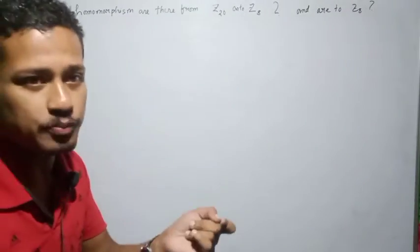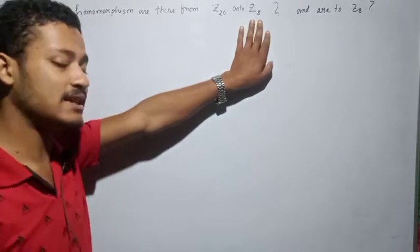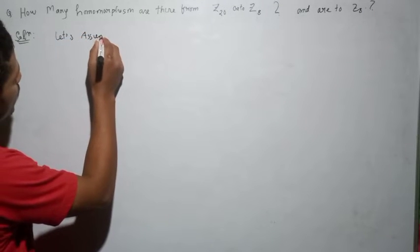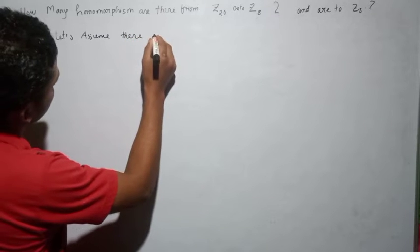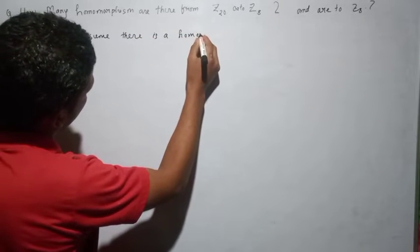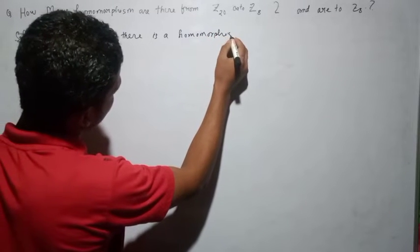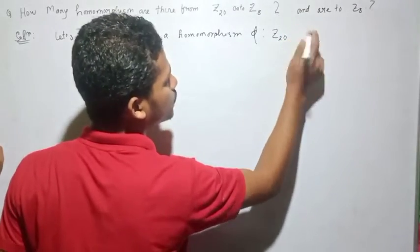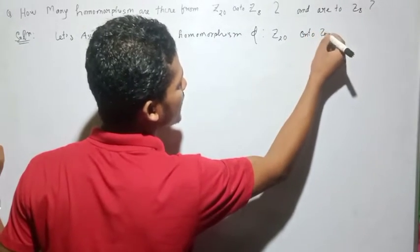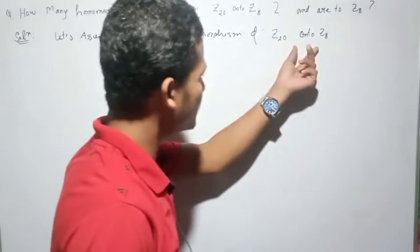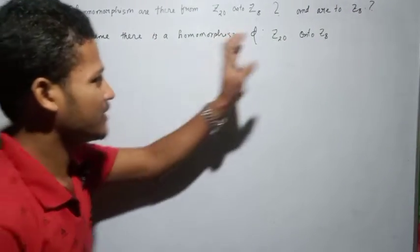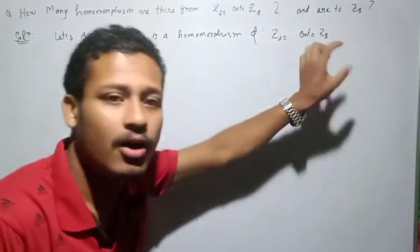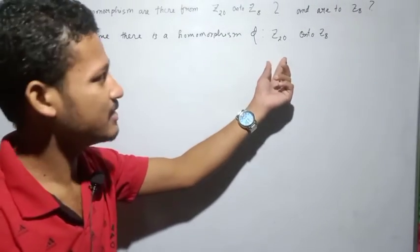So let's first assume that there is a homomorphism from Z20 onto Z8. What does that mean? It is a homomorphism from Z20 onto Z8, and we are assuming such a homomorphism exists.